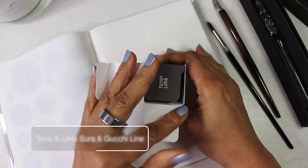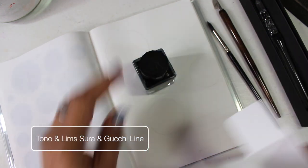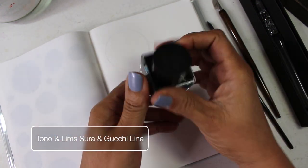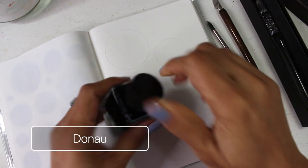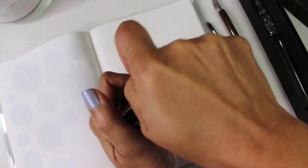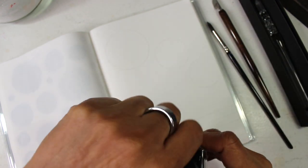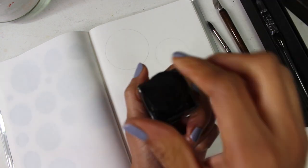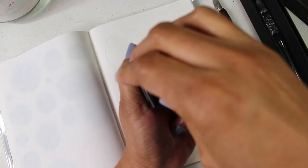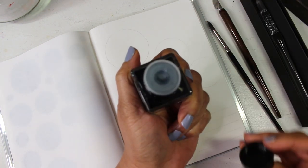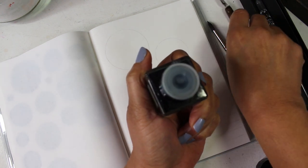Okay, so this ink is Tonal and limbs from the Sara and Gucci line. This ink is called Donau. It's named after the second largest river in Europe. And this ink is listed as a teal, but it looks like a dark blue green river. What do you think?